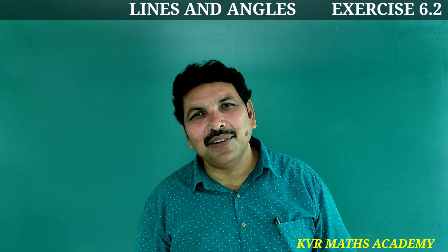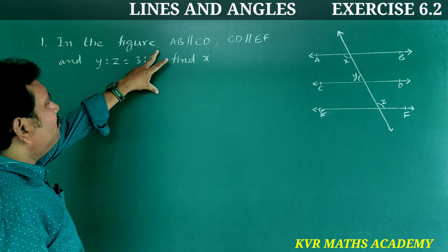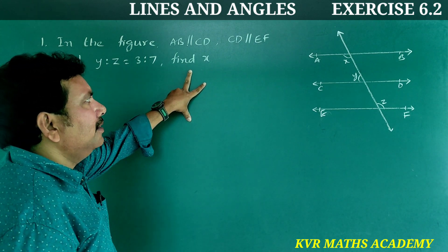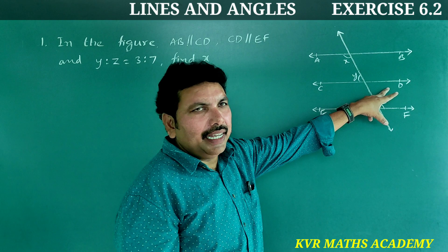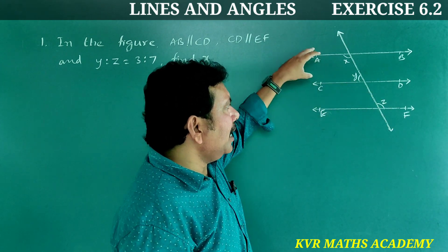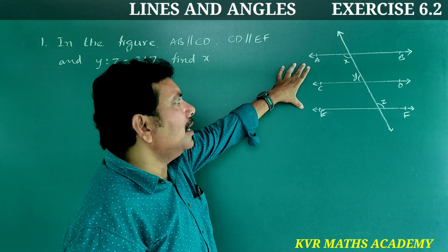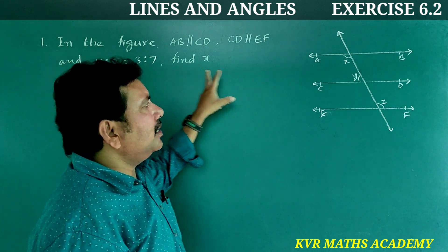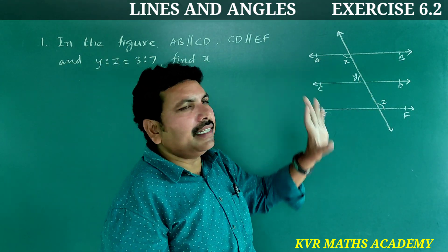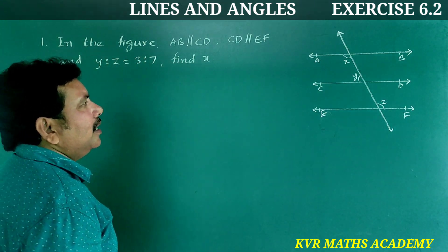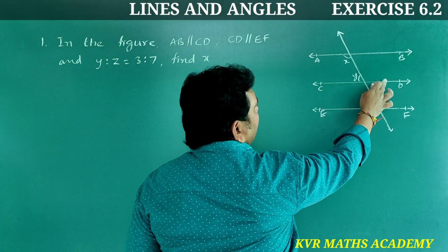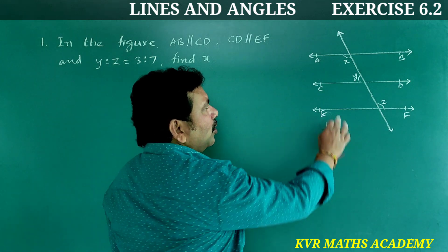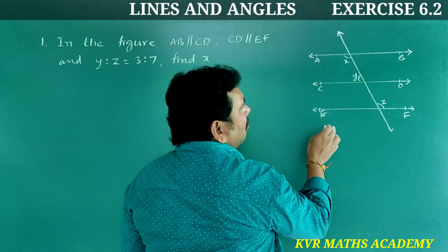First question: In the figure, AB is parallel to CD, CD is parallel to EF, and Y is to Z is equal to 3 is to 7. Find X and Z. Since AB, CD, and EF are all parallel lines and there is a transversal, the co-interior angles on the same side of the transversal sum to 180 degrees.